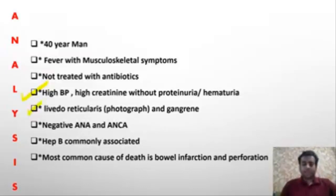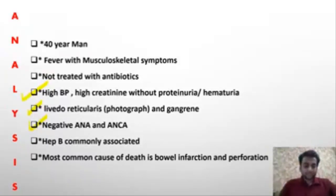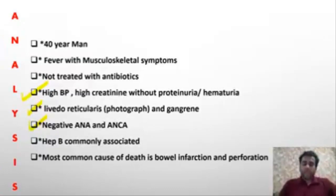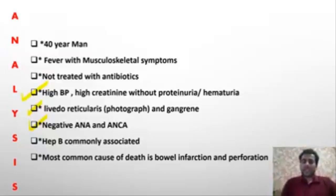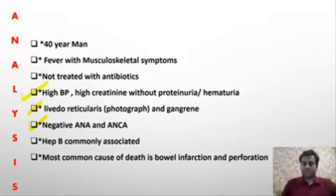Investigations showed ANA and ANCA were negative. Hepatitis B serology was positive. As I have told you in my classes before, whenever you get a vasculitis question and there is a hint towards hepatitis B positivity, always think of one specific etiology.